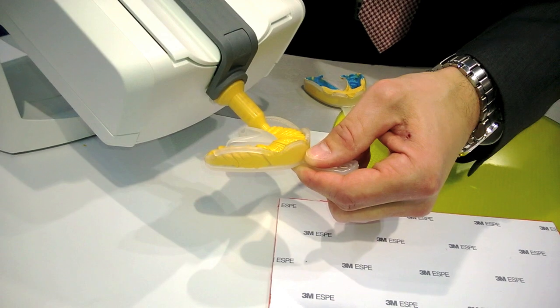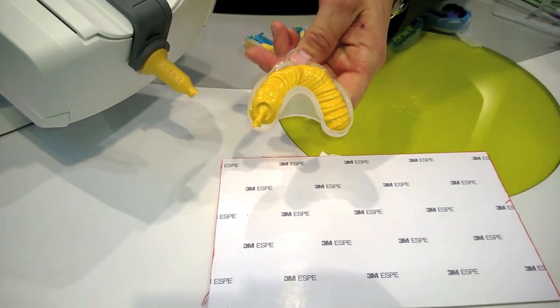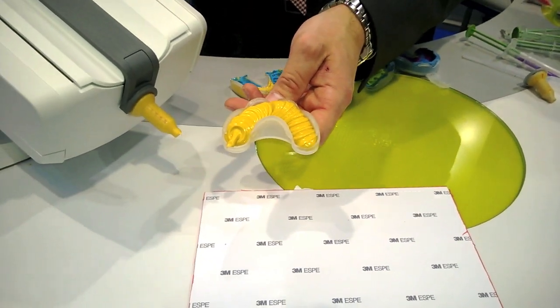You always want to keep the tip immersed to make sure you get a good homogeneous mix. You can see you can fill a full arch tray in about 15 to 20 seconds.